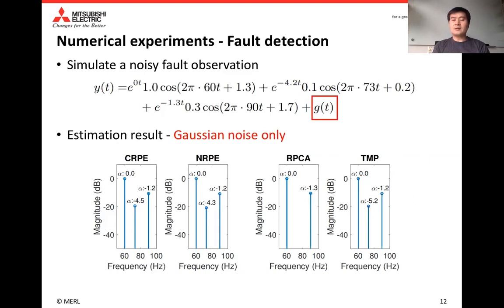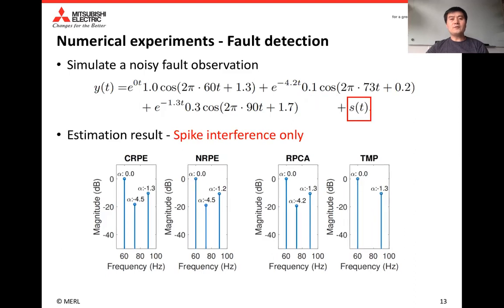When there is only spike noise, the total least squares matrix pencil fails to detect the fault frequency component, while robust PCA successfully detects the fault frequency component in that case. This shows that the two baseline methods are not robust to detecting fault frequency components across different noise situations, while our proposed methods handle both cases.